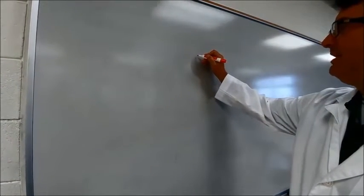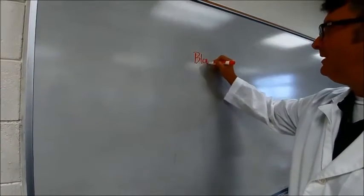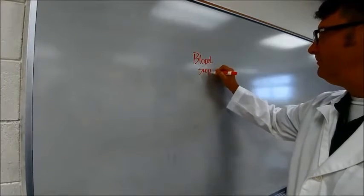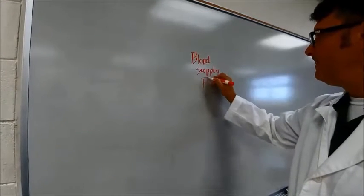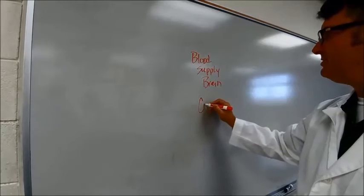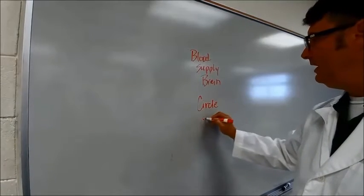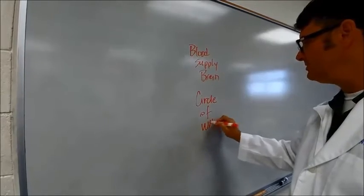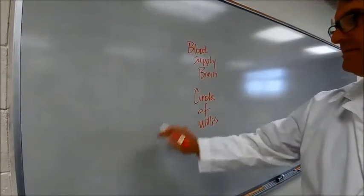So, we want to talk about blood supply to the brain. And the old way to talk about this is to call it the circle of Willis. That is kind of the old school way to describe this.